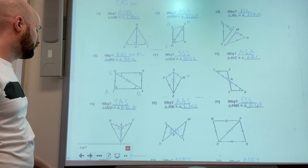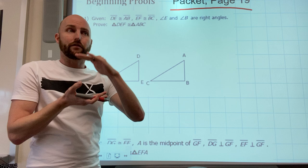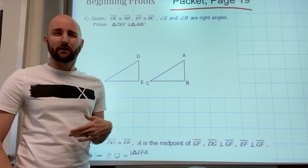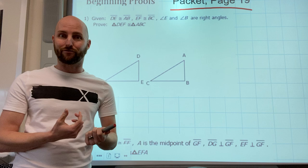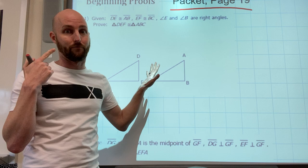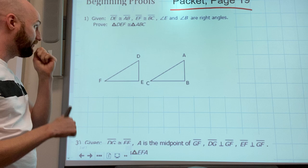These proofs are technically on page 19 of the packet, but they're squished together without proper space to work them out. You probably want to work on a separate sheet of paper - I even told my in-person students not to try to squeeze into the packet. Work on another sheet because before a quiz or test you can come back to a blank paper with no visual reminders and try them again, then check your answer key.